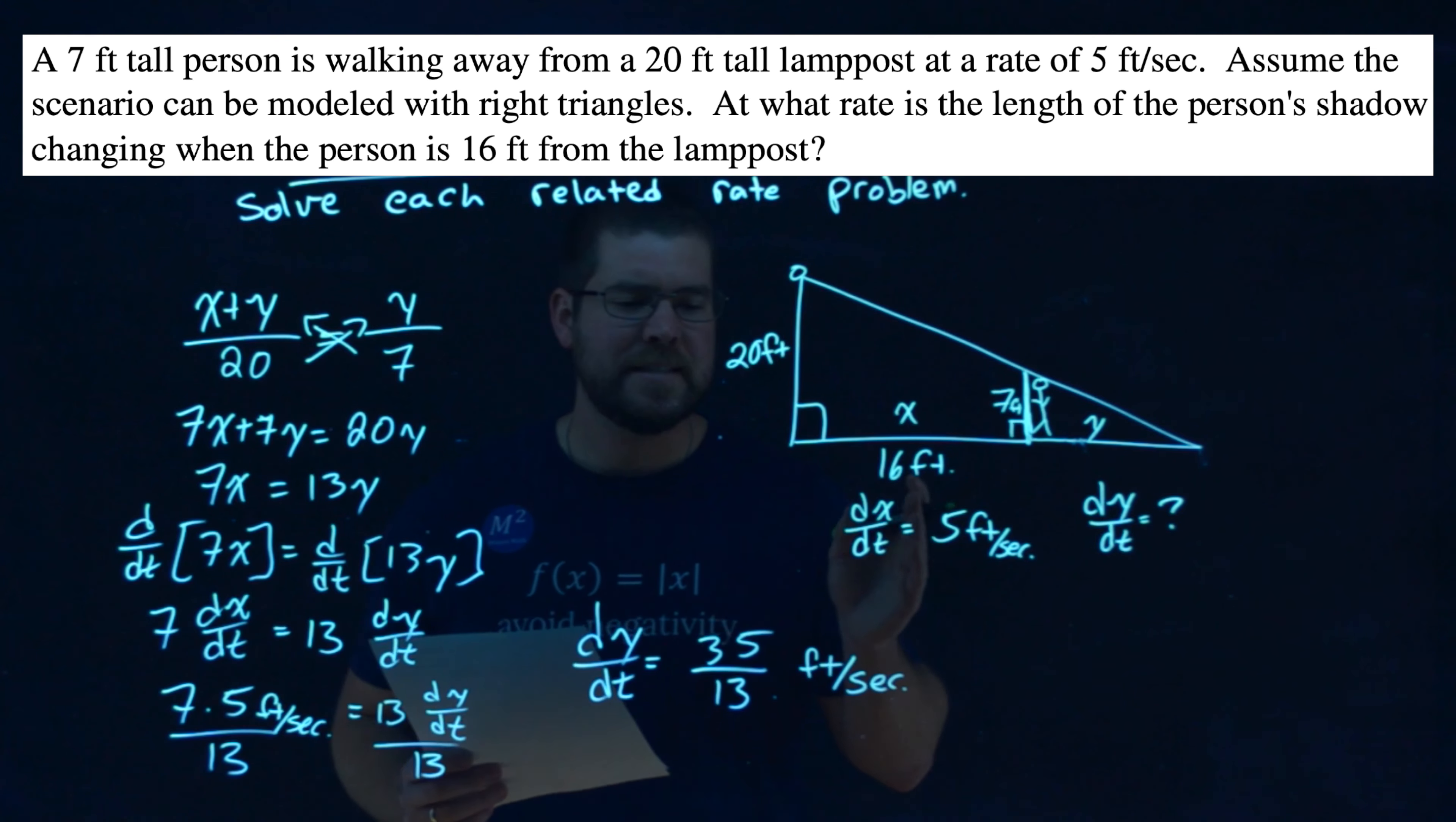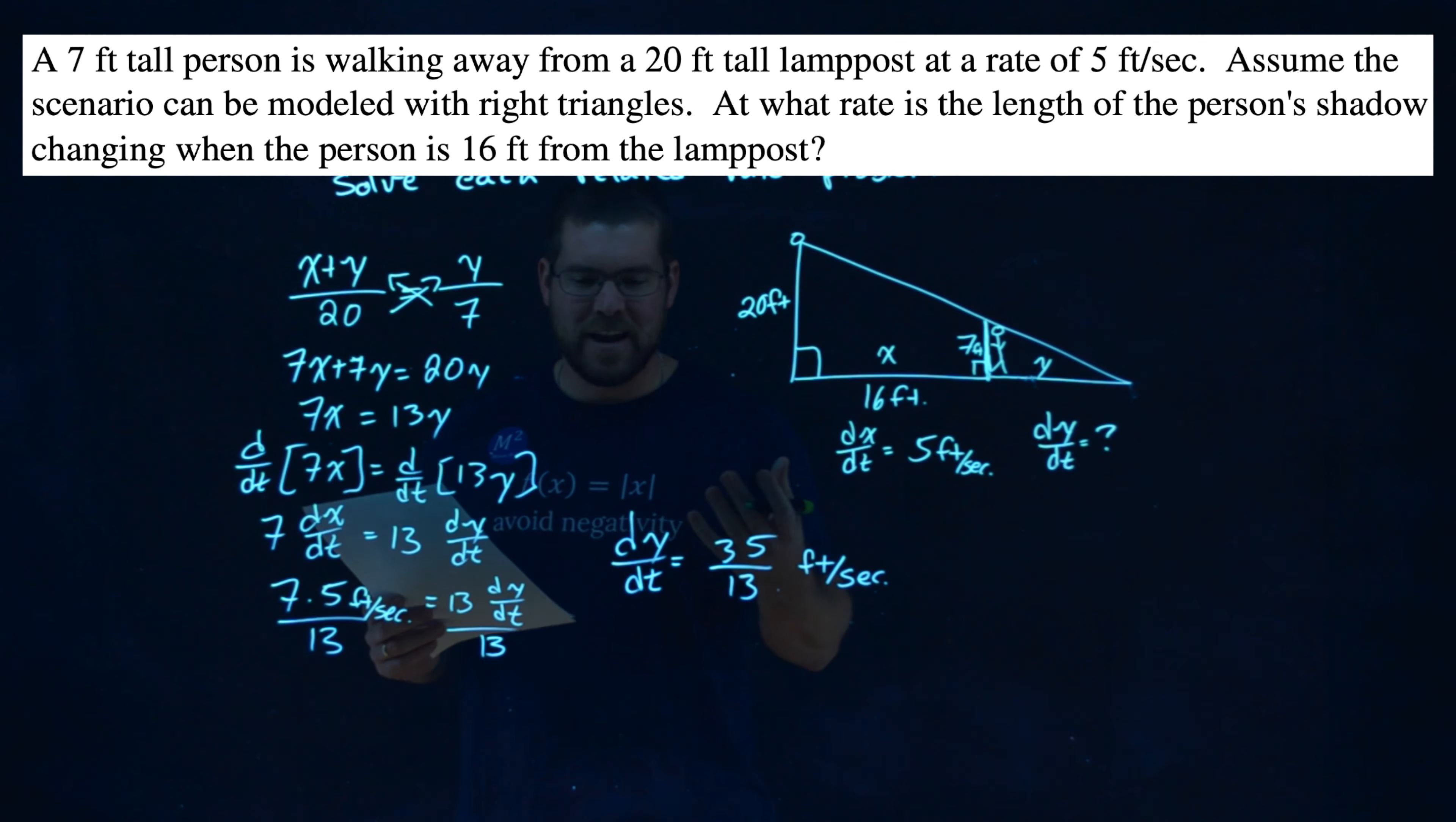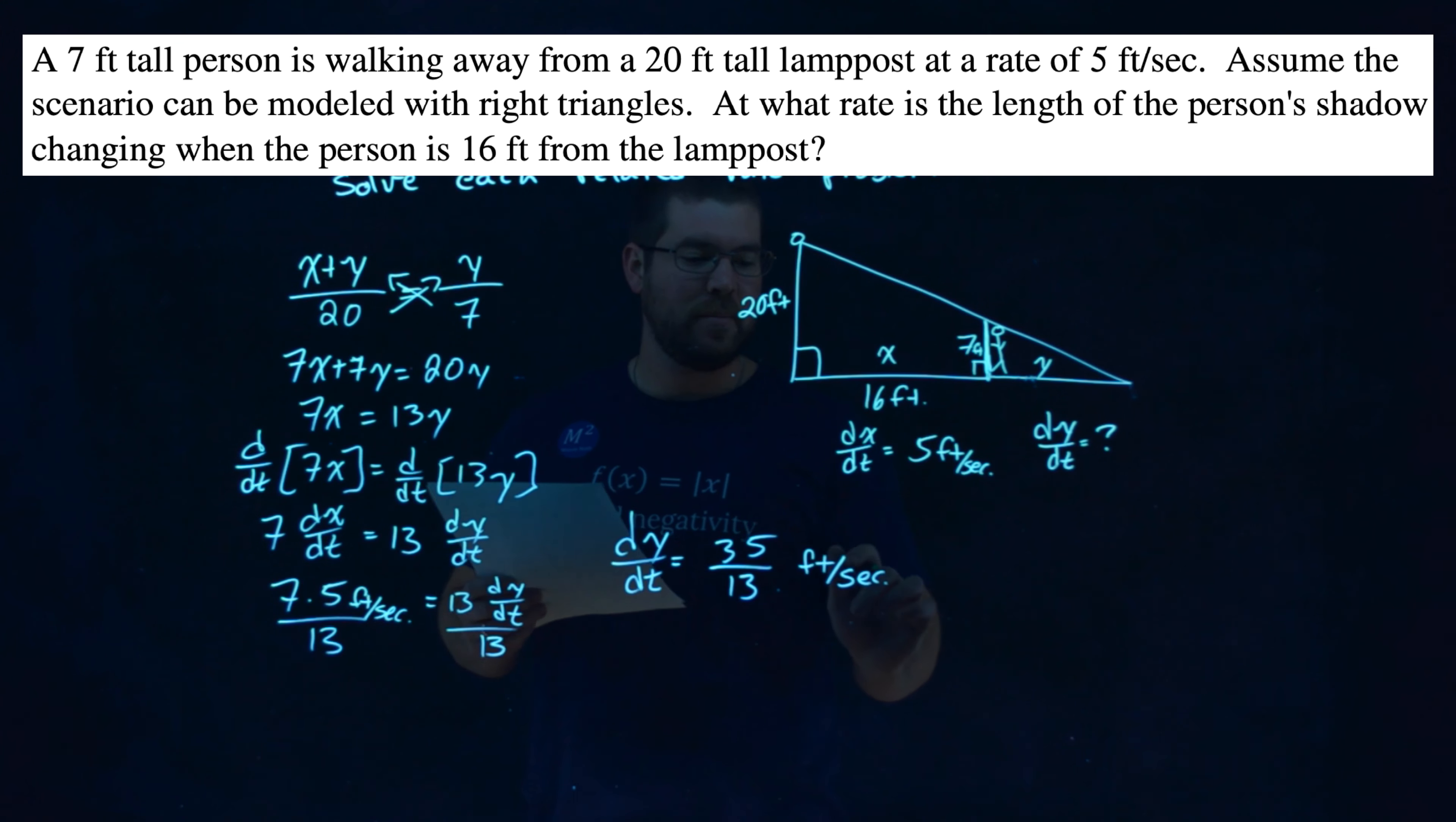And notice one thing here. We didn't actually have to find the length of y to solve this. So right now, which is kind of an interesting moment. We know the rate at which the shadow is increasing at this moment when he's 16 feet away from the lamppost, but we don't actually know what the shadow length is. And it's kind of a cool thing that we can find without knowing that information. Either way, the shadow is increasing when the person is 16 feet away is 35 over 13 feet per second.